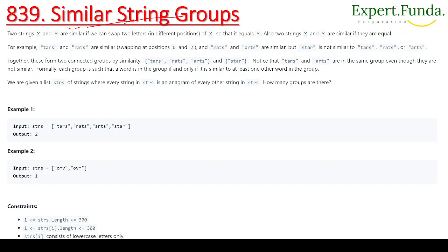Two strings X and Y are similar if we can swap two letters at different positions in X so that it becomes equal to Y. Also, two strings X and Y are similar if they are already equal. For example, 'tars' and 'rats' are similar by swapping positions 0 and 2.